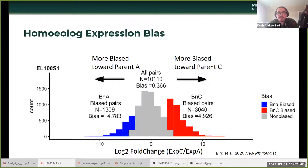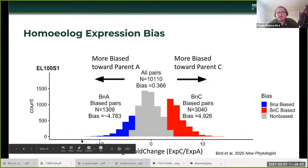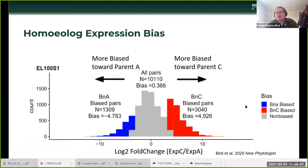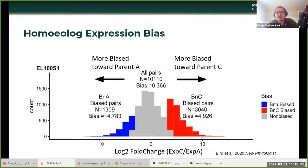Here's the first result looking at homeolog expression bias. This is a distribution of the log2 fold change between homeologs. On the right are genes significantly biased toward the maternal Brassica oleracea subgenome (BnC), using a log2 fold change cutoff of 3.5 to ensure strongly biased homeologs. Dropping to 2 gives basically the same results, but without replicates I wanted to be certain of strong transcriptome bias.